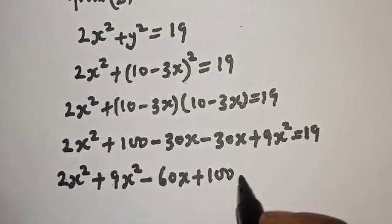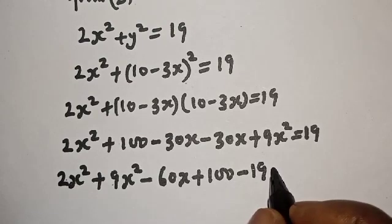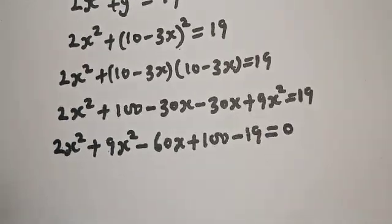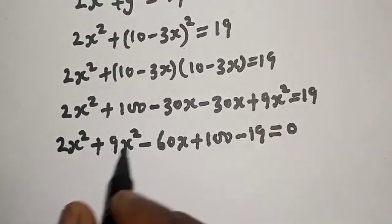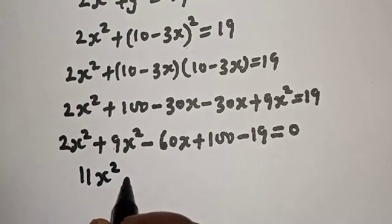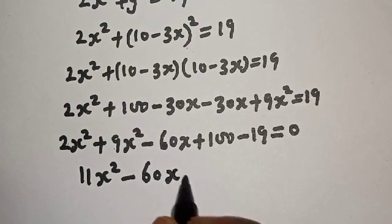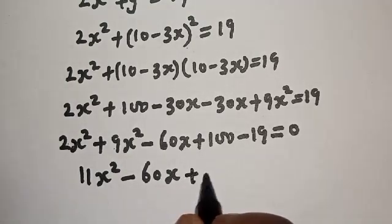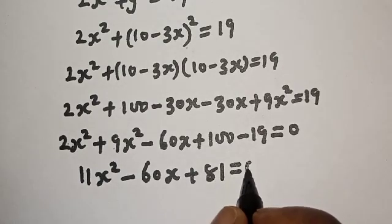Bringing 19 to the other side: 100 minus 19 equals 81. So we have 11x squared minus 60x plus 81 is equal to 0. This is a quadratic equation.